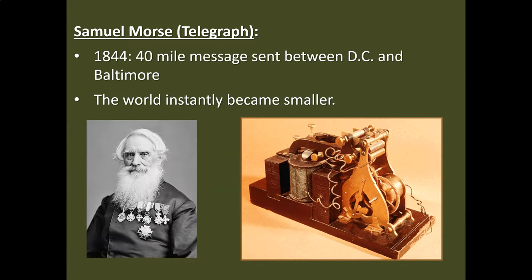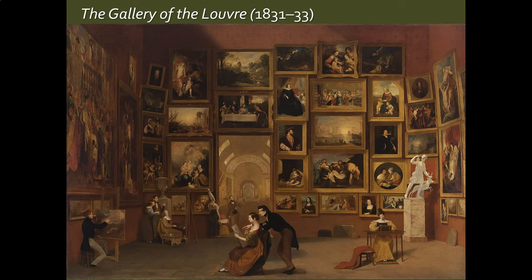Samuel Morse is also, believe it or not, famous for being an artist. In fact, this is a painting done by Samuel Morse. He painted this while he was living in Paris, and he would visit the Louvre, this famous museum which includes the Mona Lisa. He decided to make a painting of paintings, which is pretty cool.